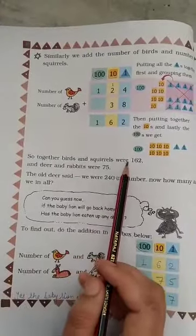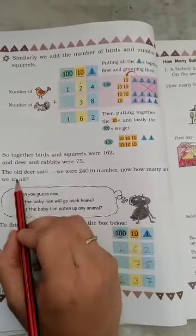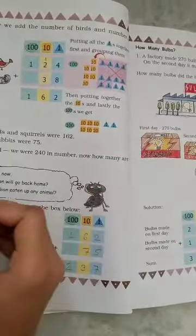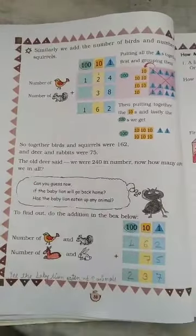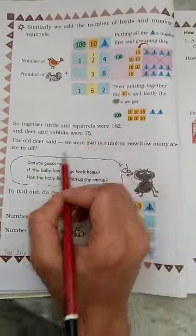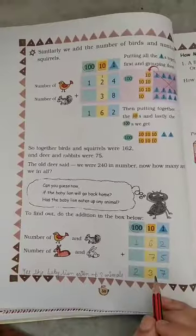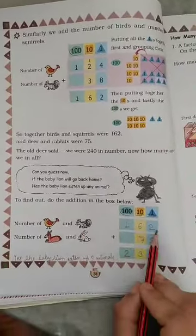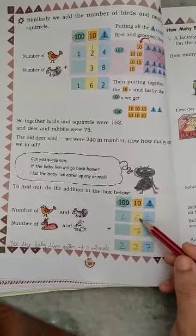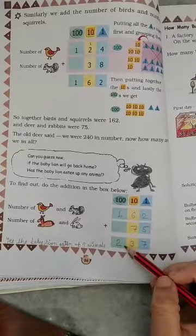So together birds and squirrels were 162. Deer and rabbit was 75. Now how many are we in all? Number of birds and squirrels 162, number of deer and rabbit 75. We add 5 plus 2 is 7, 6 plus 6 is 12, 12 plus 1 is 13, carry 1, 1 plus 1 is 2. 237.